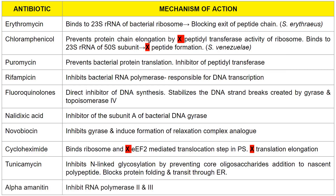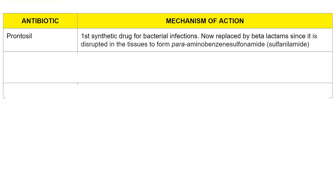Next is alpha-amanitin, an inhibitor of RNA polymerase II and III. Alpha-amanitin is commonly used to differentiate between the polymerases — polymerase I is not affected, while polymerases II and III are affected, with one having higher sensitivity. Next we have prontosil, the first synthetic drug used for bacterial infections, but it is no longer used because it gets disrupted in tissue and becomes inactive. Nowadays beta-lactams are used in its place.